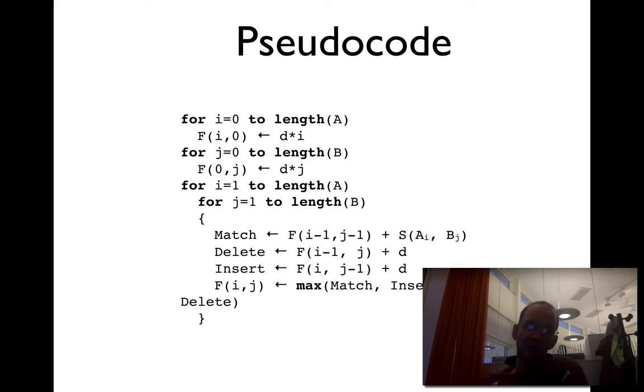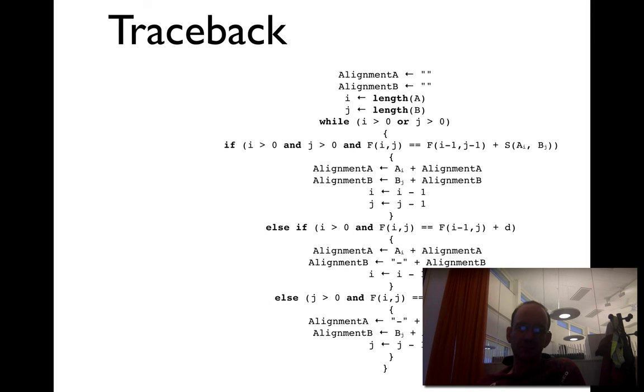You can write simple code to fill out the matrix by going through each cell, checking the match state and gap state and the cost. The traceback to find the way back is also quite straightforward.